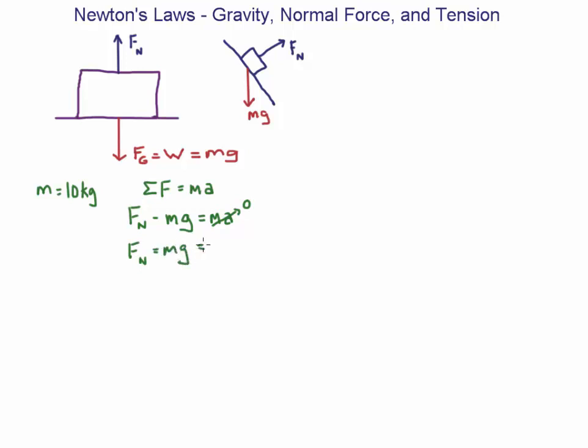So now all we have to do, plug in the numbers. 10 kilograms for the mass and 9.8 meters per second squared for the acceleration due to gravity. And we get 98 newtons. So the normal force is equal to the weight.